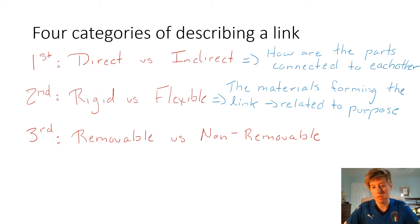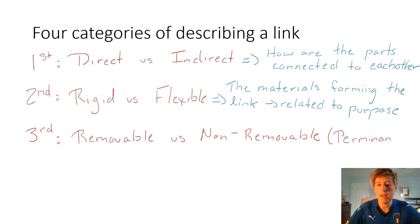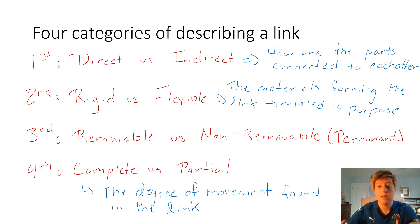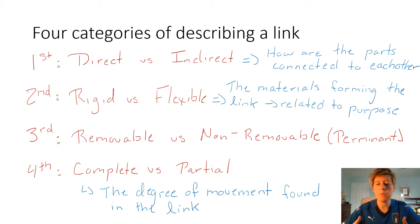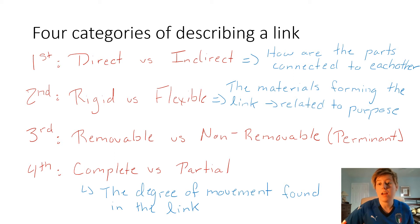The third characteristic is removable versus non-removable. Just as the name suggests, it's about how the components can be separated from one another. Another word people tend to use instead of non-removable is 'permanent' — they mean the exact same thing. Our last category is something called complete versus partial, which is really talking about the degree of movement found within the link.